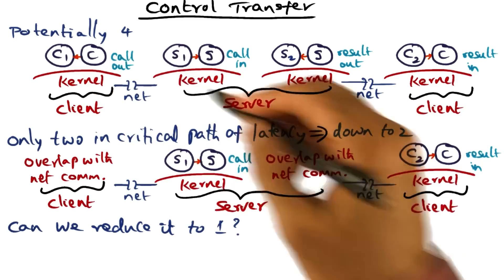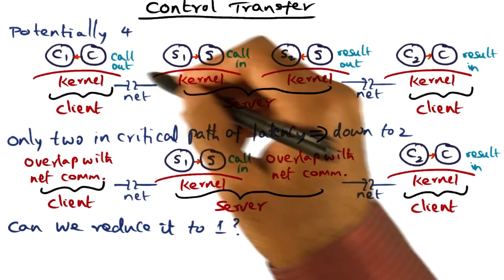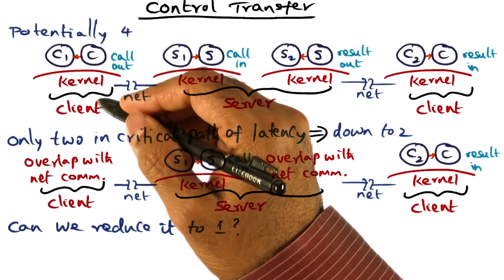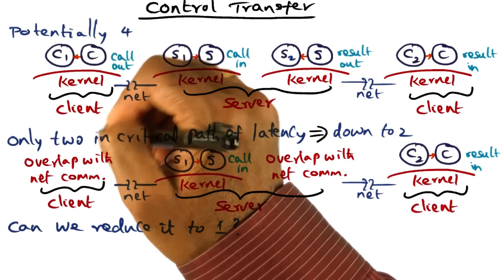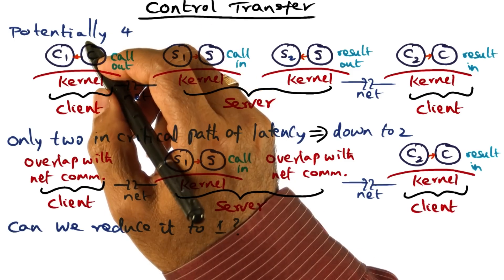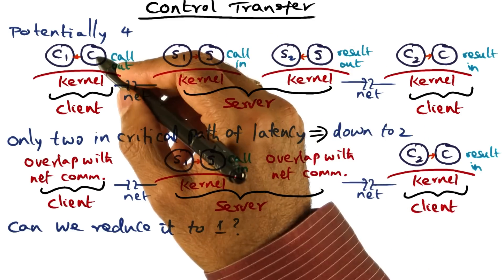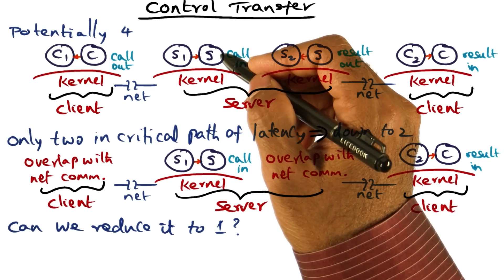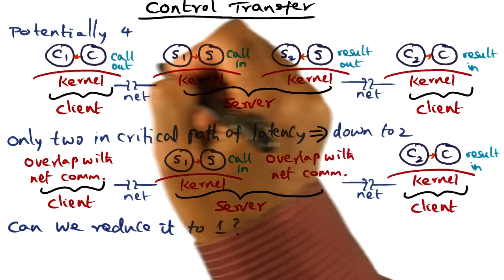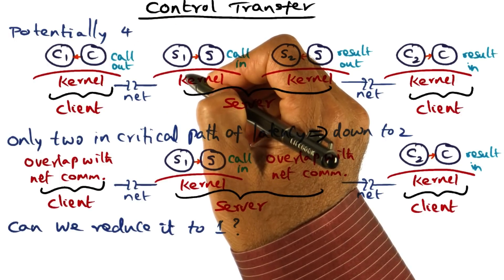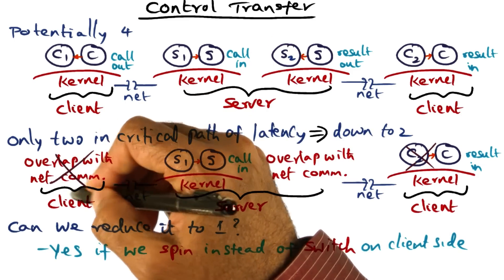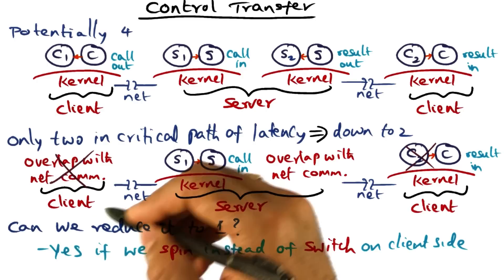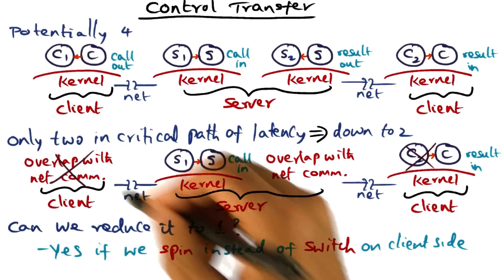But do we really need to do the switch? It really depends. If the server procedure is going to execute for a long time, then this client box is going to be underutilized for a long time, and in that case it might be a good thing to context switch in order to utilize the resources we have. But on the other hand, if this RPC call is going to come back fairly soon — if it is on a local area network and the server procedure is not going to take a long time — then perhaps this RPC call will come back very quickly. If that is the case, we can get rid of this context switch. We can spin instead of switching on the client side.